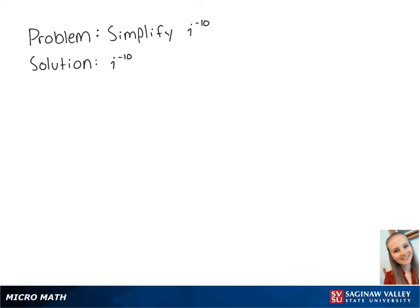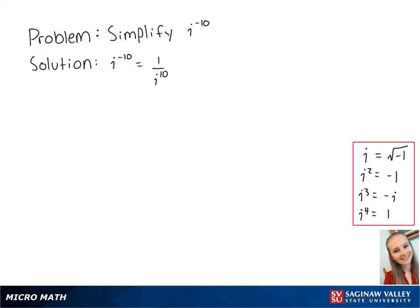For this problem, we want to simplify i to the negative 10th power. Using our exponent properties, we can rewrite this as 1 over i to the 10th power.